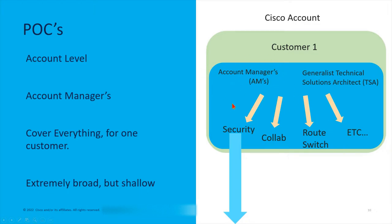Account Managers are on the sales side — they don't go into deep detail about products or designs. The generalist Technical Solutions Architect is the technical sales-side person. When you need to talk about a design or potential solution, they're the first ones you'll be connected with. If your questions are fairly detailed and this isn't just a simple renewal or exercise you've been through before, they'll likely refer you to the next point down the line: domain specialists.